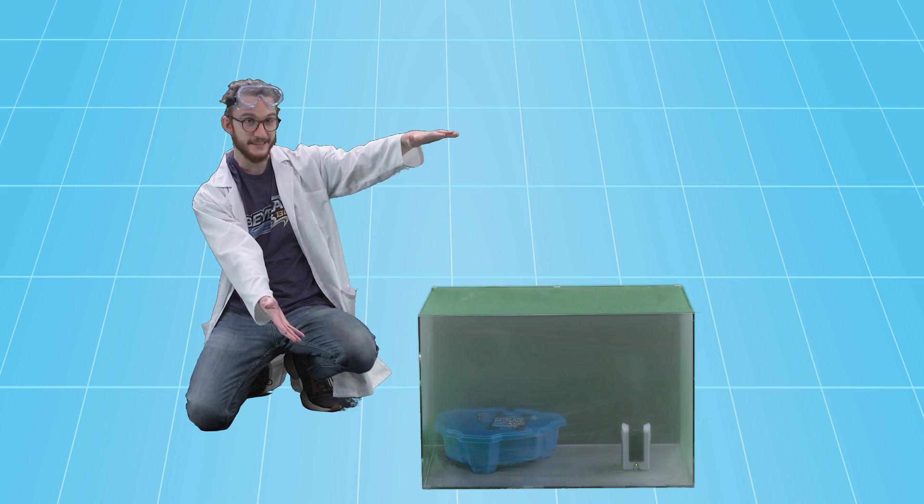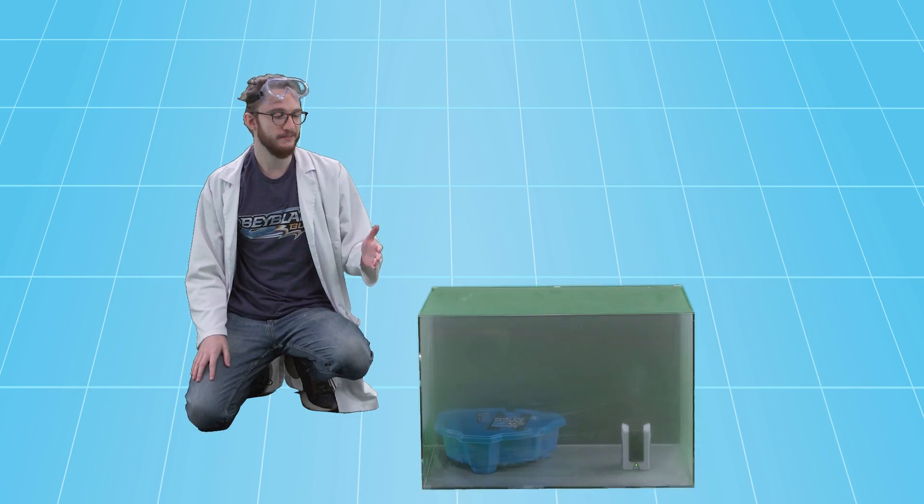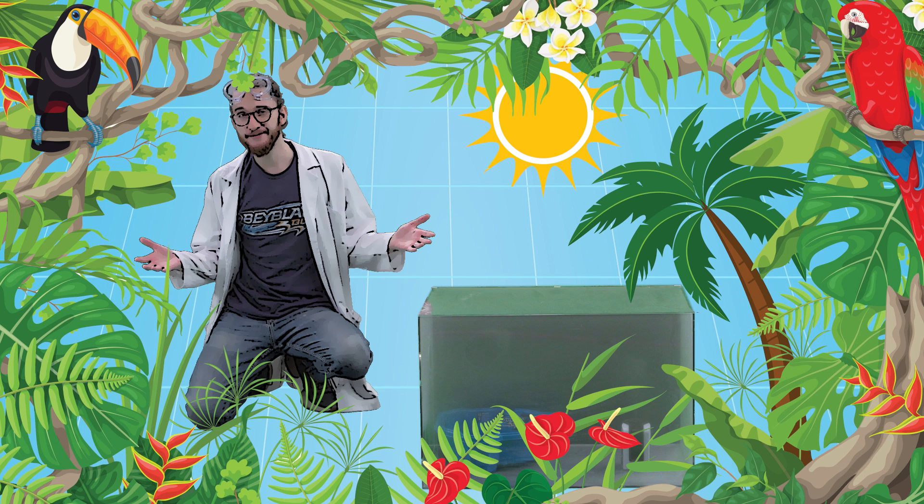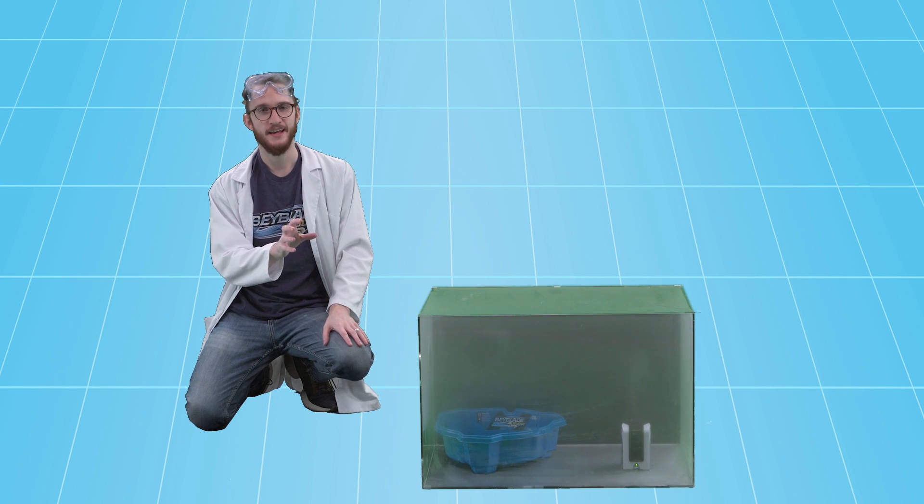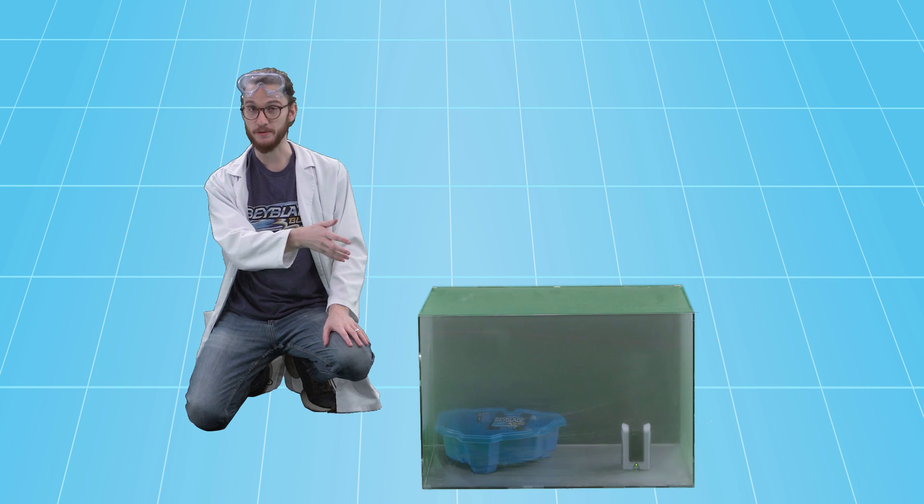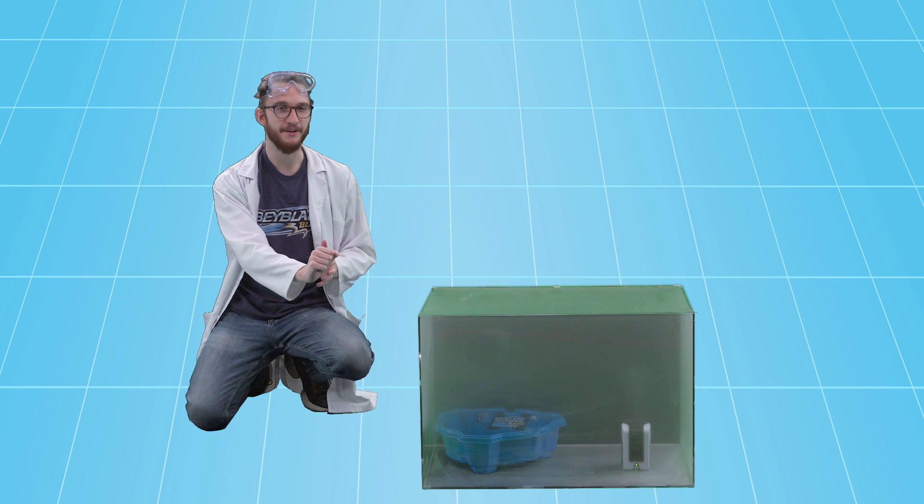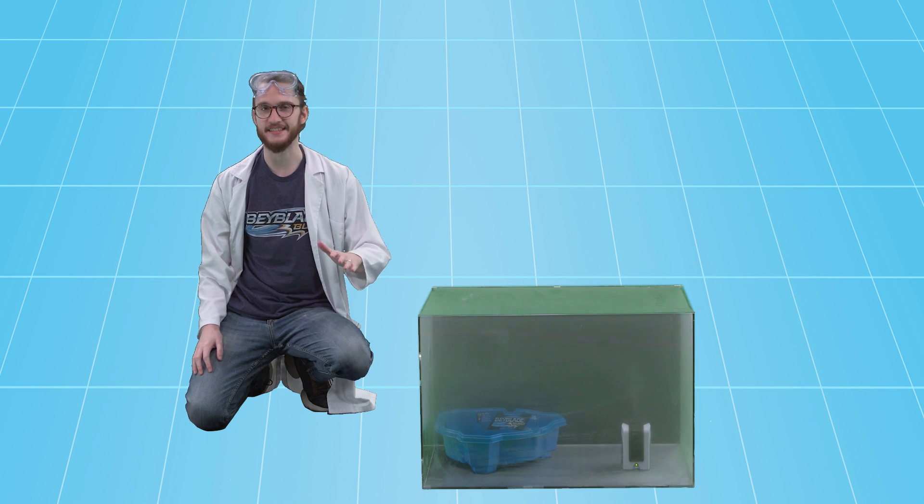This box contains air at a really high humidity, meaning lots of moisture. It's kind of like a tropical vacay. All this moisture makes the air in here super dense. That means that when we launch a Beyblade in here, it's going to struggle to push through the air. In other words, there will be more drag acting against it.